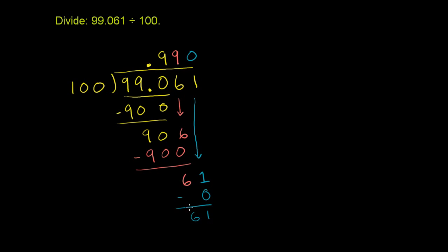Now, you might be tempted to say, OK, it goes into it, well, we could always put a leading 0 here. 0.990 times with the remainder of 61. But whenever you do, first of all, that's not right. The remainder isn't 61, because we're now in the decimal, we're to the right of the decimal point. But in general, whenever you're dividing to decimals, you want to keep dividing. You don't want to have a remainder.